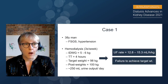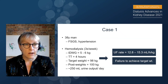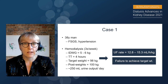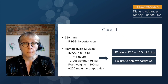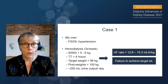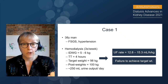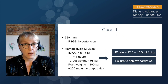Let's look at case one from my dialysis practice. This is a 38-year-old man with FSGS and hypertension on three times a week hemodialysis. He tends to gain five to six kilos between treatments, has a four-hour treatment time, and his prescribed target weight is 98 kilograms. His post weights tend to be about 100 kilograms, and his ultrafiltration rates range between 13 and 15 mLs per hour per kg — higher than we would prefer. So we have too high an ultrafiltration rate and he is not routinely achieving his dry weight.